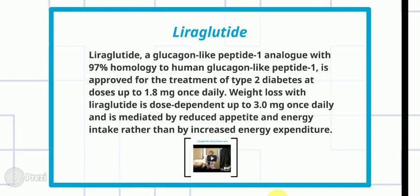Liraglutide is a glucagon-like peptide-1 analogue with 97% homology to human glucagon-like peptide-1. It is approved for the treatment of type 2 diabetes at doses up to 1.8mg once daily. Weight loss with liraglutide is dose-dependent up to 3mg once daily and is mediated by reduced appetite and energy intake rather than by increased energy expenditure.